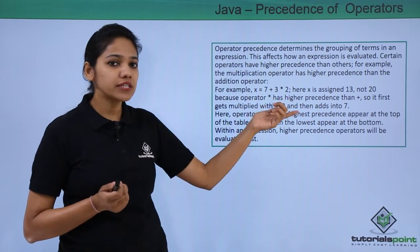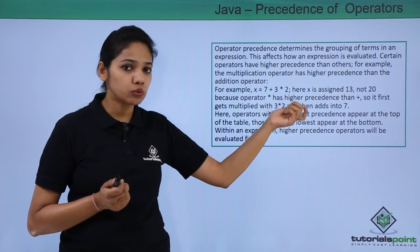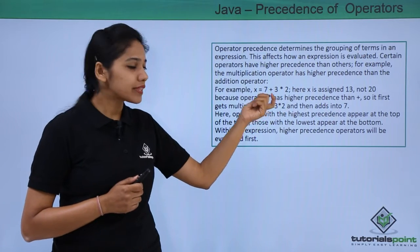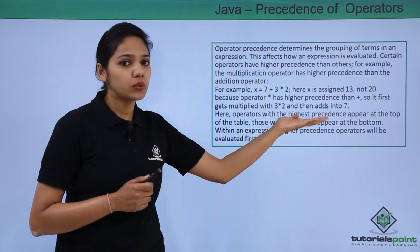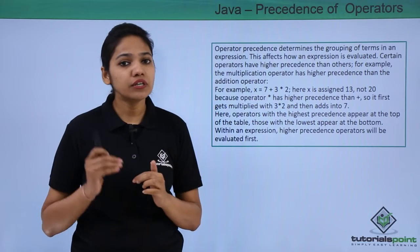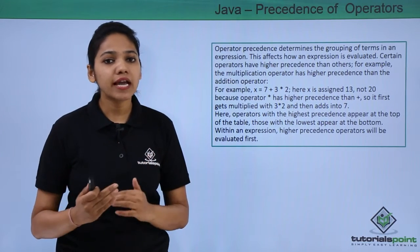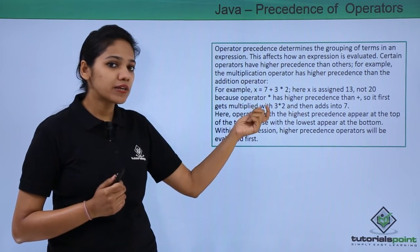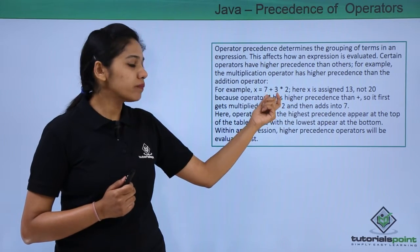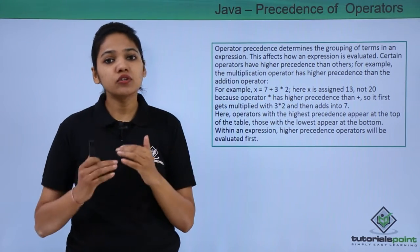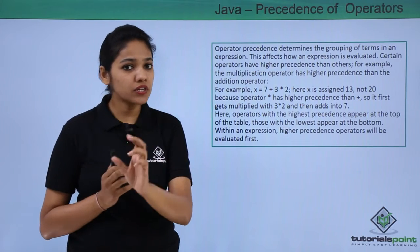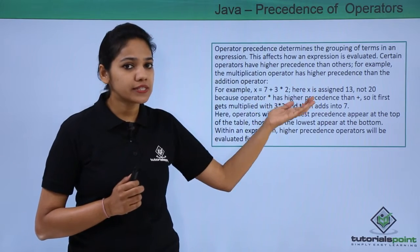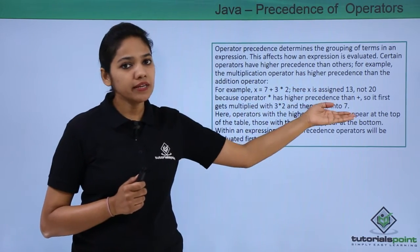Let us take the example of 7 plus 3 into 2. You might calculate 7 plus 3 as 10, then multiply by 2 to get 20 — but that is wrong in the computer. Multiplication is given higher precedence than addition, so parentheses are placed around 3 into 2. That gives 3 into 2 equals 6, and 6 plus 7 equals 13.